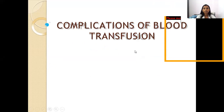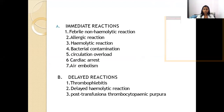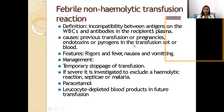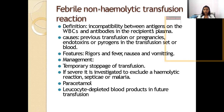Complications of transfusion are divided into immediate and delayed reactions. Immediate reactions: Febrile non-hemolytic reaction — defined as incompatibility between antigens on WBCs and antibodies in the recipient's plasma. Causes include previous transfusion or pregnancies, and endotoxins or pyrogens in the transfusion set or blood. Features: rigors, fever, nausea, and vomiting. Management: temporary stoppage of transfusion; if severe, investigate to exclude hemolytic reaction, septicemia, or malaria.